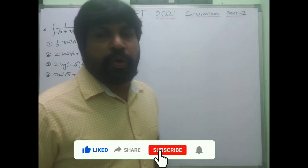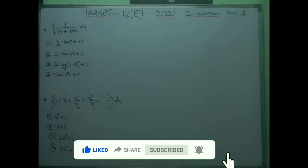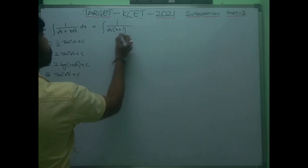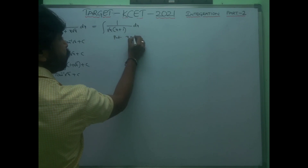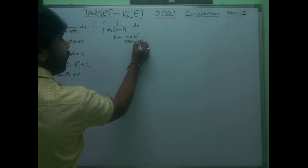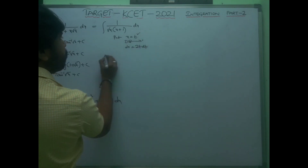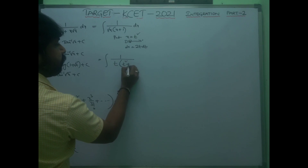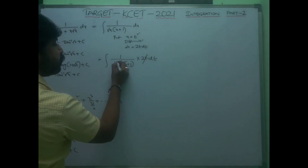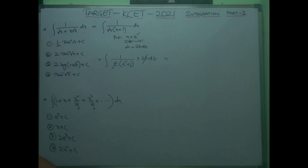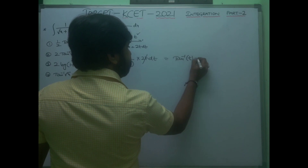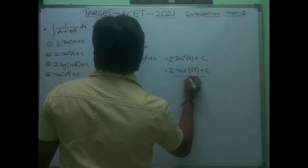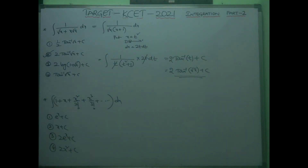Next model: integral of 1/(√x + x√x) dx. Take √x as common in the denominator: ∫1/[√x(1+x)] dx. Put x = t², so dx = 2t dt. Then √x = t, and the integral becomes ∫2t dt / [t·(1+t²)] = 2∫1/(1+t²) dt = 2·tan⁻¹(t) + C = 2·tan⁻¹(√x) + C. Second option is the correct answer.